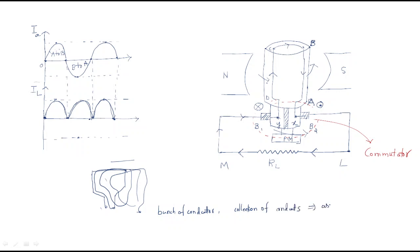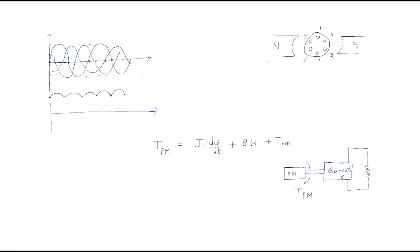The collection of conductors is nothing but our armature. Up to now we discussed only the single conductor. If the conductors increase, how will the DC generator act? Here, observe that even when the number of conductors increases — one and one-dash is the first conductor, two and two-dash is the second conductor, three and three-dash is the third conductor — if three conductors are present, what happens to the current generated?